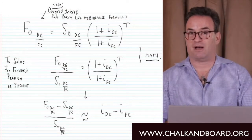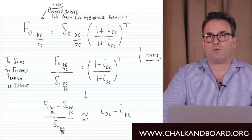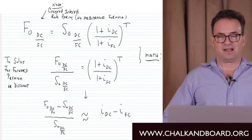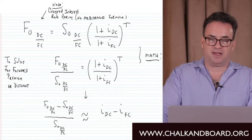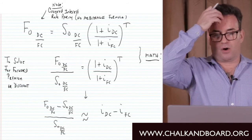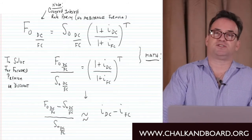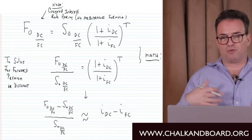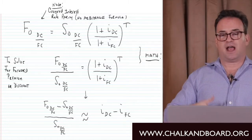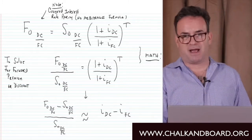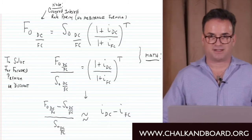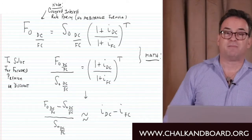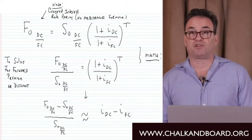If I take this formula on your screen and manipulate it a little bit — because I want to isolate the interest rates — here's what I do mathematically. First, I divide both sides by the spot exchange rate, giving me: forward over spot equals one plus the domestic interest rate over one plus the foreign interest rate, raised to the time, as you can see in the second line. Then through a bit of math — working through it to eliminate those ones — you end up with the formula at the bottom of your screen, which is what you need to know.